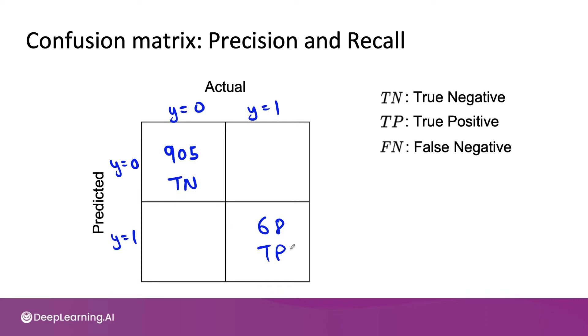The false negatives are the examples where your algorithm thought it was negative, but it was wrong. The actual label is positive. So these are false negatives. So maybe there's 18 of that. And lastly, false positives are the ones where your algorithm thought it was positive, but that turned out to be false. So 9 false positives.